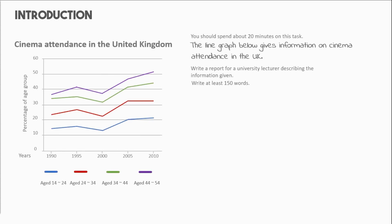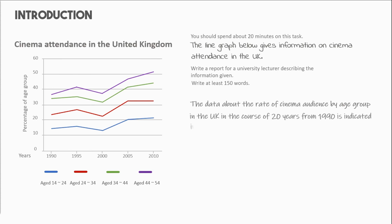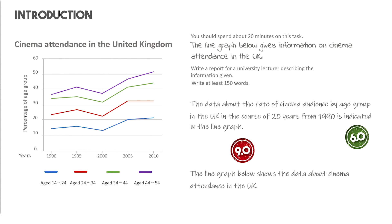Looking at this graph and its prompt, we have these two examples. Example one: 'The data about the rate of cinema audience by age group in the UK in the course of 20 years from 1990 is indicated in the line graph.' Example two: 'The line graph below shows the data about cinema attendance in the UK.' It is band 6.0 because most of the words are not paraphrased and some vocabulary are very basic. However, the band 9.0 sample includes advanced vocabulary and important details, which is the year.